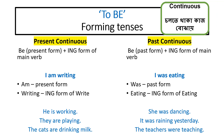'Continuous' means something that is happening right now — an ongoing action. For example, 'I am writing' means I am writing right now; 'I was eating' means I was in the process of eating. We will discuss tenses in detail in a later video.